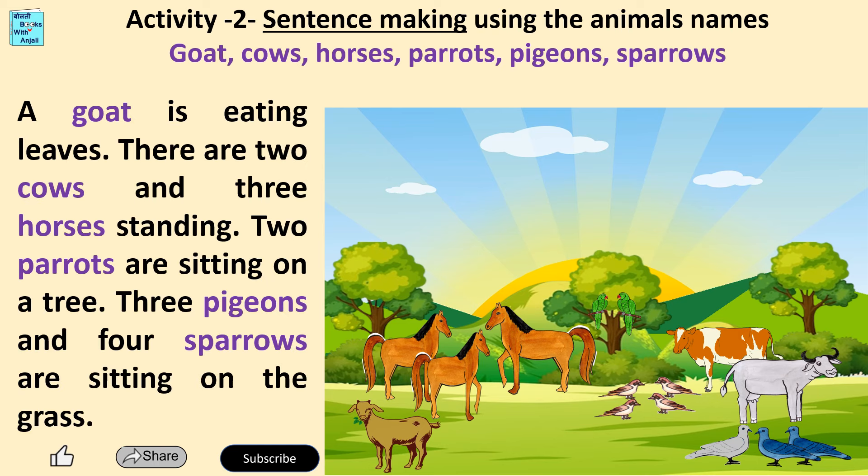A goat is eating leaves. There are two cows and three horses standing. Two parrots are sitting on a tree. Three pigeons and four sparrows are sitting on the grass. Thank you.